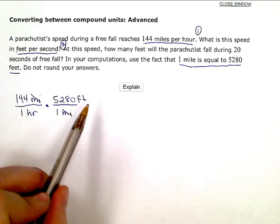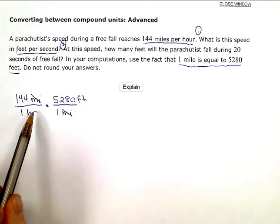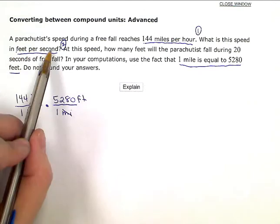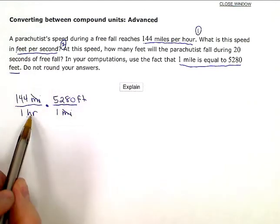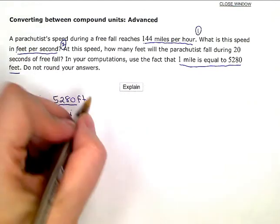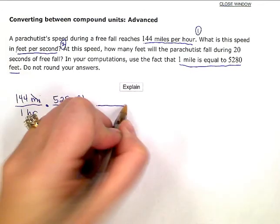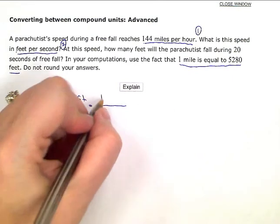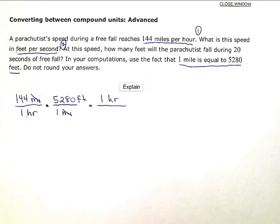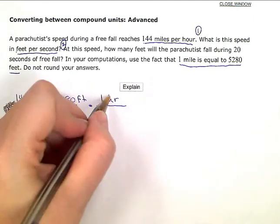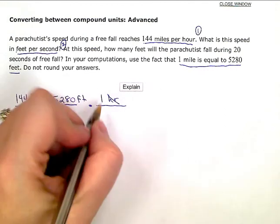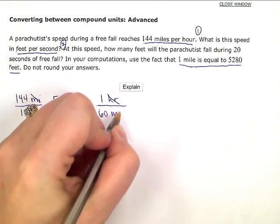Now my units are feet per hour. I'm still not there yet because I want feet per second. So now I need to change this hour unit into seconds. So I'm going to add some more ratios here. Now they didn't tell me this, but I know that one hour is equal to 60 minutes. So I'm going to put the one hour up here so again those two will cancel, one on top with one on bottom, and 60 minutes in the denominator.